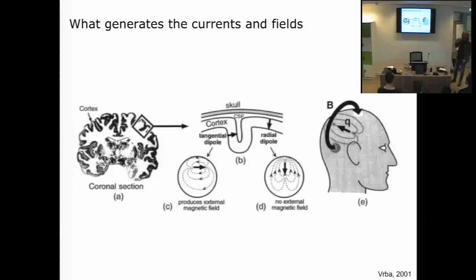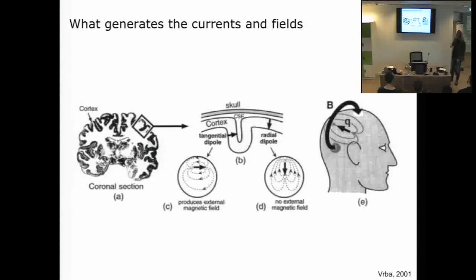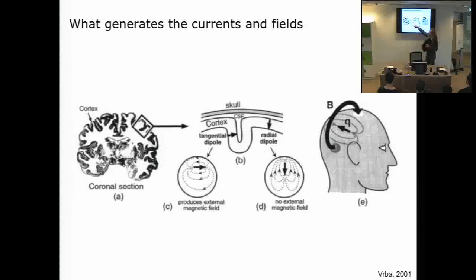We can look at this at multiple scales. Here on the left is a coronal section of cortex, and zooming in, you see the cortex layer where neurons in layer 4 are nicely aligned. Depending on where activity occurs, we may or may not see it with MEG. For tangential dipoles — for example, in the wall of a sulcus — they produce currents and a magnetic field that we can see. But there are also volume currents: with a tangential dipole, the majority of volume currents go deep through the tissue of the head.